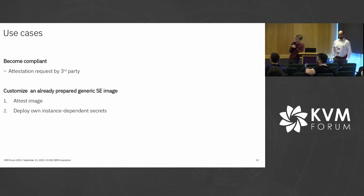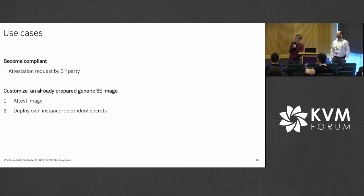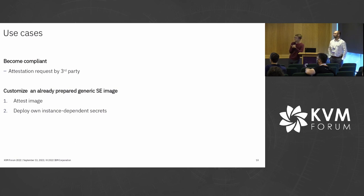We would first have to attest the image externally — that it's running under secure execution and more or less the expected workload — and then deploy our own instance-dependent secrets. After that, next time we can attest it implicitly while logging in.